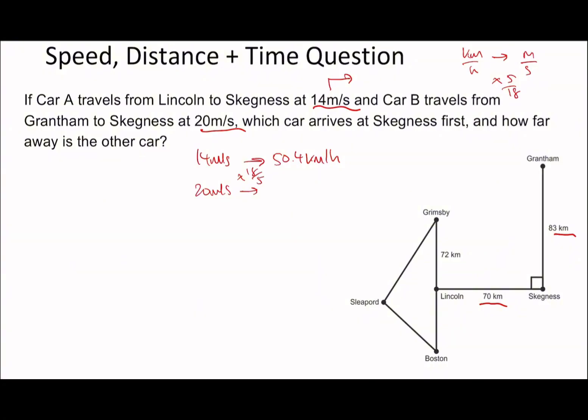Now work out the relevant details. This first bit is from Lincoln to Skegness, that's 70 kilometers. Speed is distance over time, so to work out time you rearrange: distance over speed. That's 70 divided by 50.4, which gives 1.388 recurring hours.